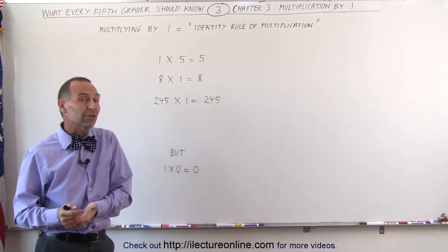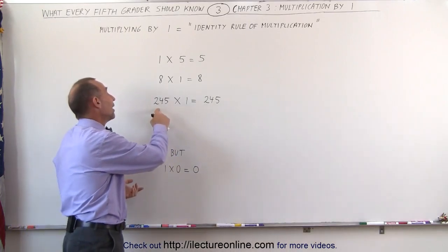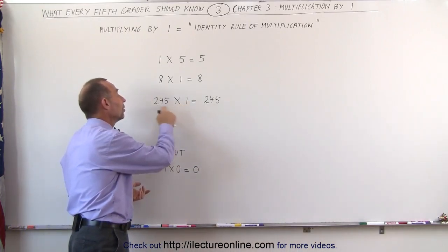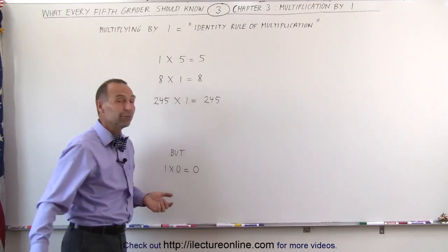No matter how big the number is. If the number is as big as 245, 245 times 1, you simply get the number back of 245.